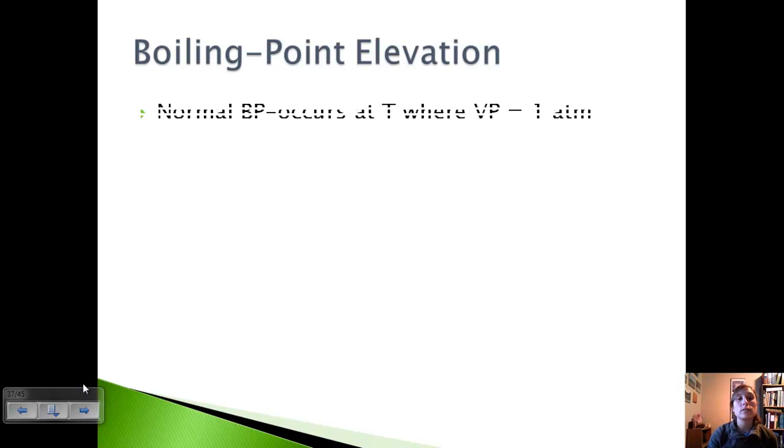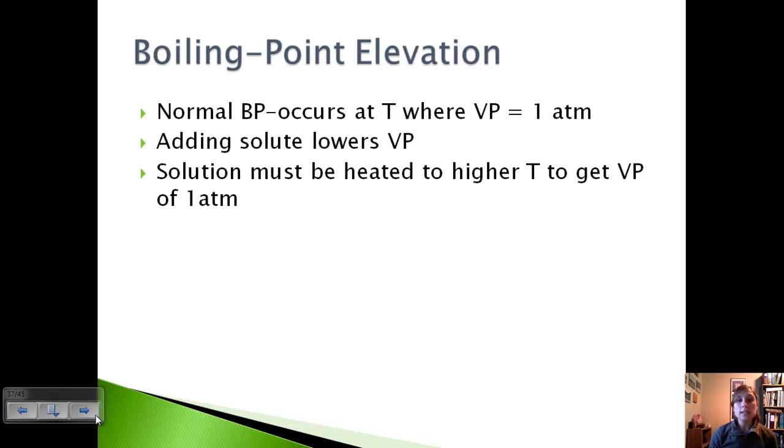Let's talk about boiling point elevation first. We know that normal boiling point occurs at the temperature where the vapor pressure is equal to one atmosphere. We also know that adding a solute lowers the vapor pressure. So we must heat our solution to a higher temperature to get the vapor pressure at one atmosphere. This means that a non-volatile solute elevates the boiling point of the solvent.